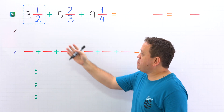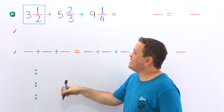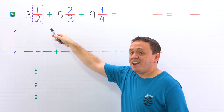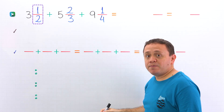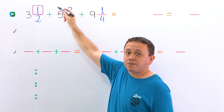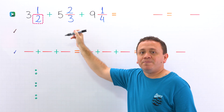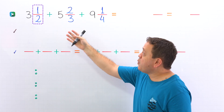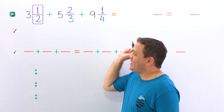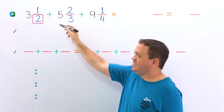First, we need to remember that a mixed number, like this one, is the sum of a whole number and a proper fraction. Also, a proper fraction is a fraction where the numerator, the top number, is less than the denominator, the bottom number. For example, one half is a proper fraction, given that the numerator one is less than the denominator two.